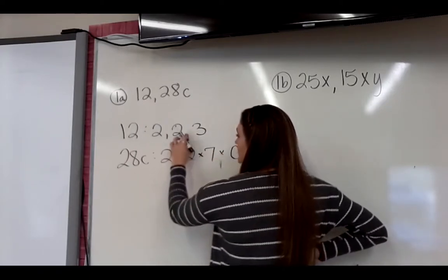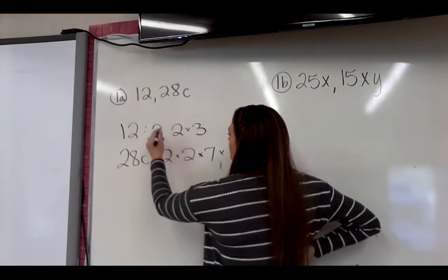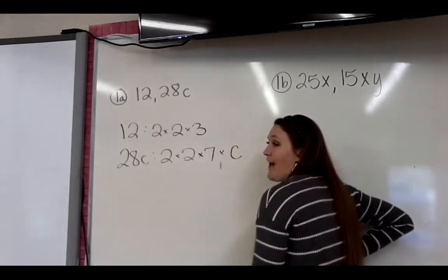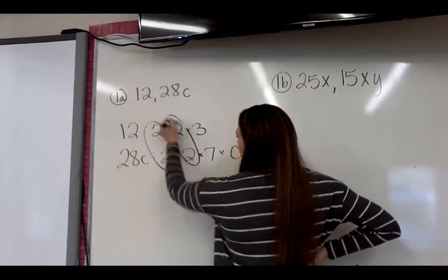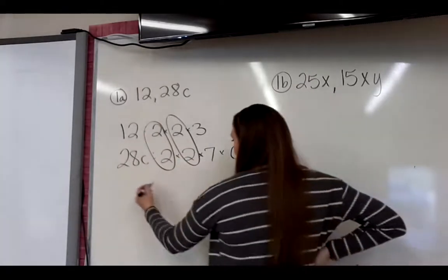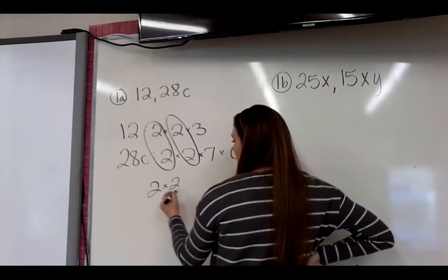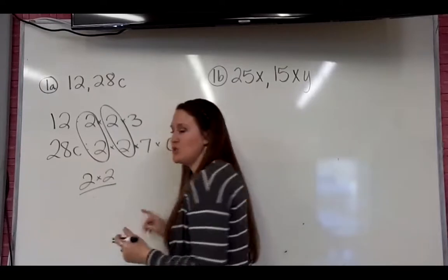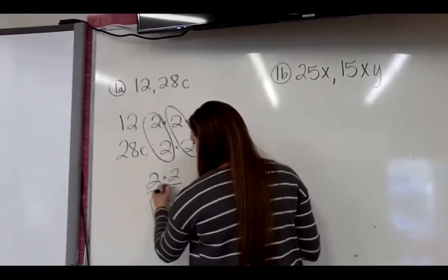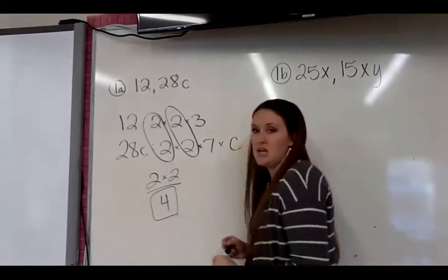Just because we don't know what c is, so we have it. So then we're just finding what they both have in common. So if I look at this, here's a 2. Here's another 2. So they both have two 2's. I know that sounds silly. So you solve that. 2 times 2 is 4. So my greatest common factor of those numbers is 4.